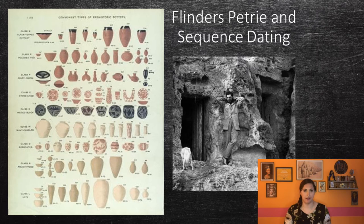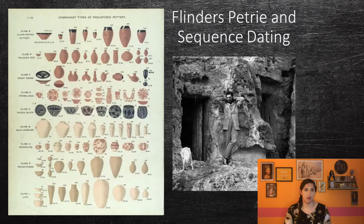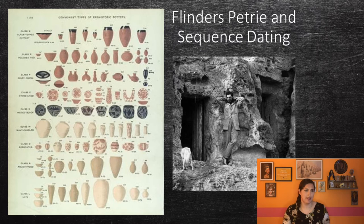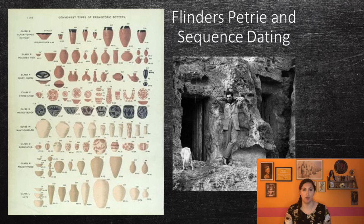Flinders Petrie is sometimes called the father of pre-dynastic Egypt. He was a British archaeologist who was the first to systematically excavate and record Egyptian sites. He created the chronology of pre-dynastic Egypt through pottery styles that were found, using a concept called sequence dating. Sequence dating relies on the concept that, as artifacts change over time, they do so in a predictable manner, making it possible to date them relative to one another. Petrie dated the pots based on their decoration and how they were made. There are a variety of different pottery types, and I'm going to mention a few as we go through each culture.